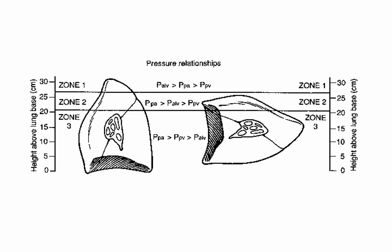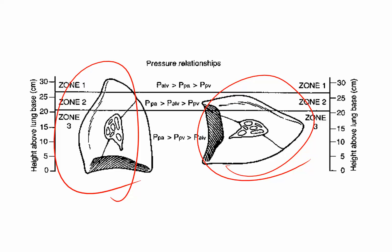This slide shows pressure relationships in the different lung zones for patients who are upright versus supine. When the patient is upright, there actually is some Zone 1 of the lung. When supine, because the height difference between the heart and the lung apex is greater than when upright, Zone 1 tends to disappear or at least be reduced.